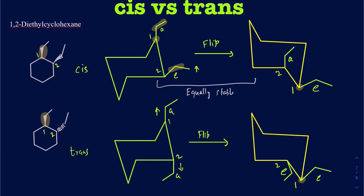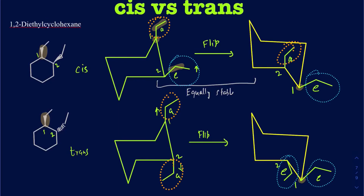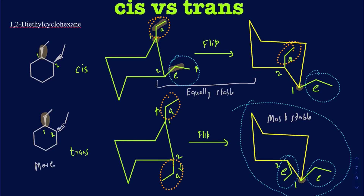Now if I want to compare between the two geometrical isomers — cis and trans — in cis I can clearly see I have one of the ethyls always equatorial and one always axial. But when I look at trans, I have two on the equatorial, or both in the axial. Since in the case of trans you have more groups on the equatorial, the trans is indeed going to be more stable. So comparing cis and trans 1,2-diethylcyclohexane, trans is the more stable geometrical configuration.